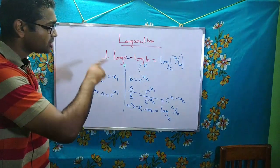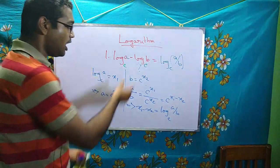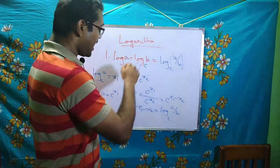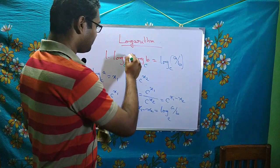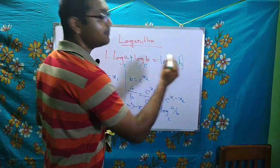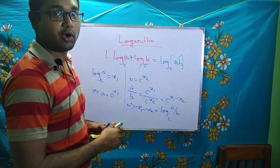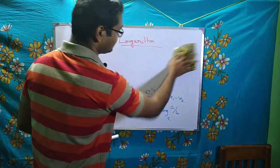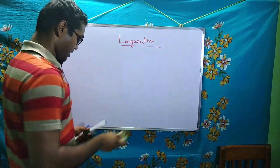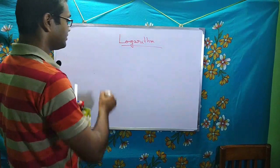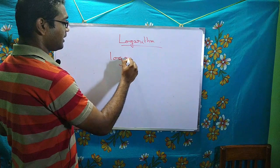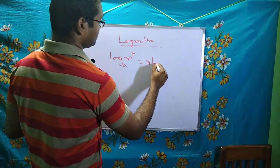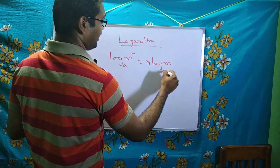From the first two properties of logarithm we can see: logarithm changes minus into division and plus into multiplication. This is the beauty of logarithm.